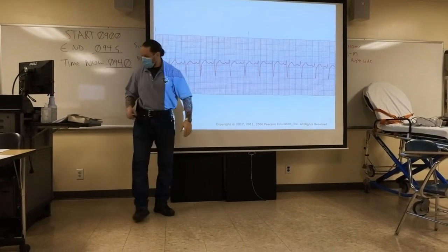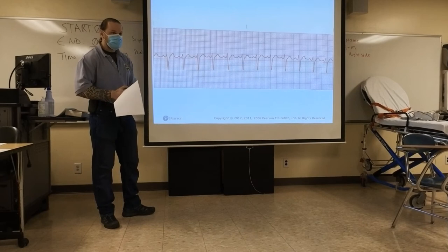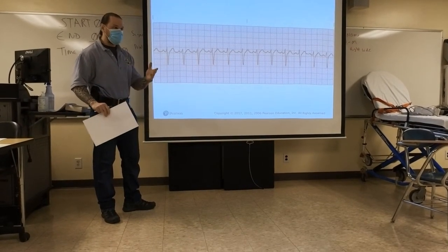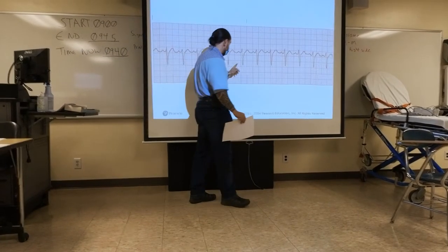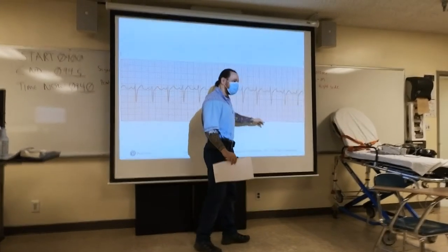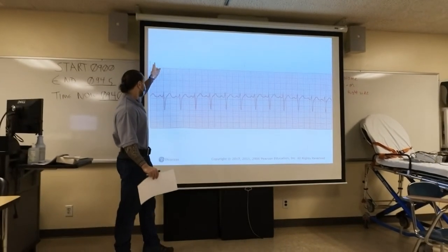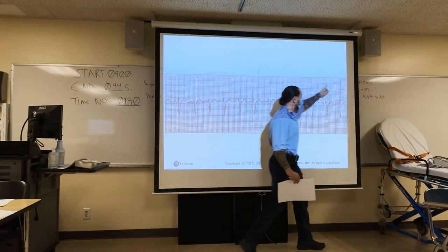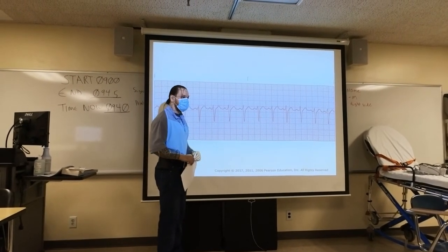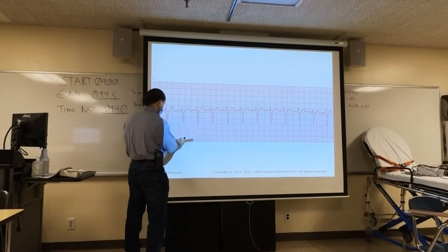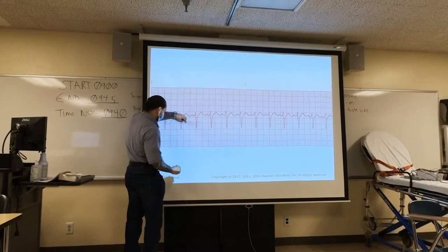I'll show you examples. First, to get the rate on a strip, count the R-waves. Counting across the six-second strip gives 12 R-waves times 10 equals 120. You know it's a six-second strip because of the hash marks on top — from here to here is three seconds, and from here to here is another three seconds, altogether six seconds. Then take a piece of paper, mark off the R-to-R and march it across to check regularity. It seems like they're matching, so the rhythm is regular.